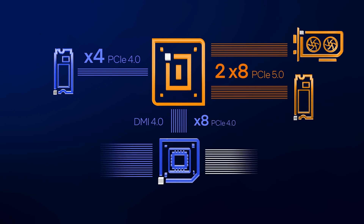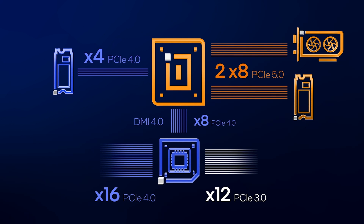On peak-configured Z-based motherboards, the PCH can provide an extra 16 lanes of PCIe 4.0 and 12 lanes of PCIe 3.0, giving a system a total of 48 PCIe lanes to work with.